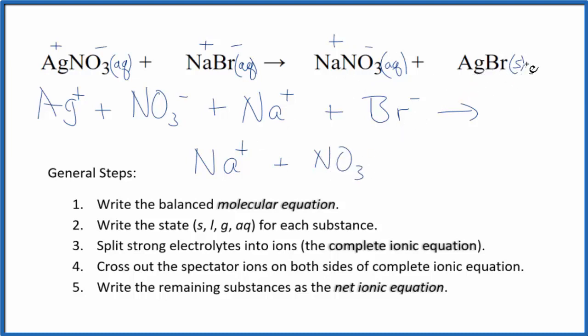And then for the silver bromide, with net ionic equations, when we have solids, we don't split those apart. So we're just going to write AgBr. It stays together. It's a solid. This is the complete or total ionic equation.